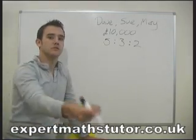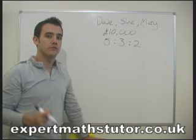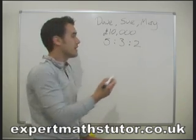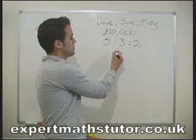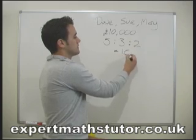Okay, so we have five pounds for David, three pounds for Sue, two pounds for Mary. How much money is going to be in each round? Well, we get five plus three plus two, so that equals ten.